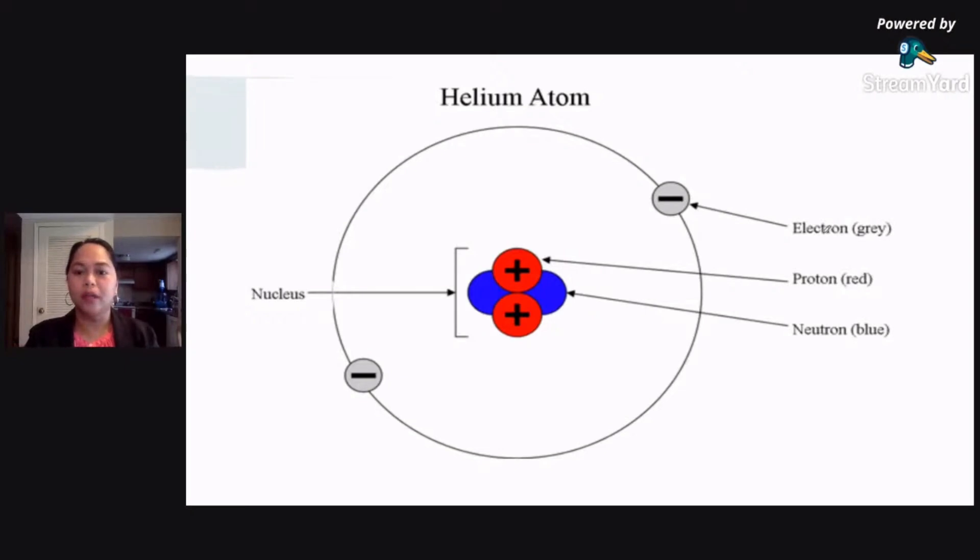Okay, so yung subatomic particles natin are electrons, protons, and neutrons. As you can see, electron here is colored gray, your proton is colored red, and your neutron is colored blue.